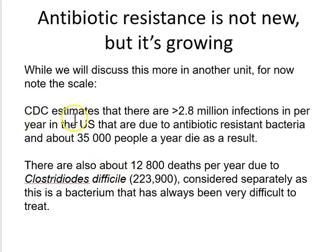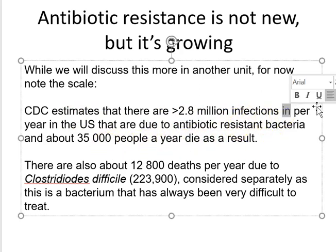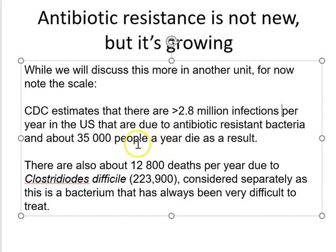The CDC estimates that there are more than 2.8 million infections per year in the US due to antibiotic resistant bacteria, and about 35,000 people die as a result. Those who don't die would still have had to be treated much more aggressively, using antibiotics that are more toxic and typically expensive, with more hospitalizations as a result of the complicating factor of an antibiotic resistant pathogen.